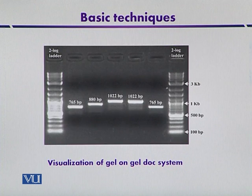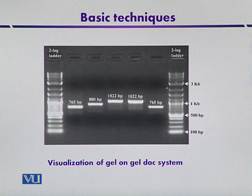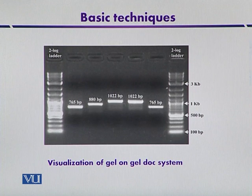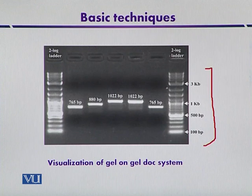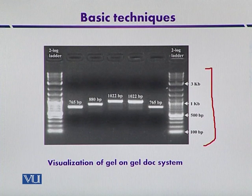In addition to exposure to ultraviolet light, gel documentation systems are now available by which you can visualize the DNA and save pictures of the gel that you have run by gel electrophoresis. Here are the different fragments within the marker. The marker tells us the length of different fragments in the ladder that is run in one column at the right or left side.